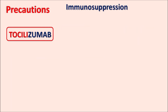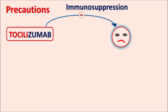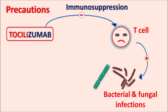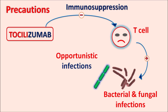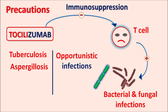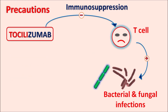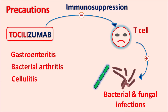Since this drug produces immunosuppression, T cell activity is reduced, which reduces immunity and promotes activation of bacteria as well as fungal infections. Opportunistic infections are particularly increased by tocilizumab, which is a common effect with many immunosuppressants. Opportunistic infections such as tuberculosis, aspergillosis, candidiasis, and even cryptococcus infections may increase. Development of these bacterial and fungal infections should be closely monitored as they can be fatal. This drug can also increase gastroenteritis, bacterial arthritis, cellulitis, and urinary tract infections.